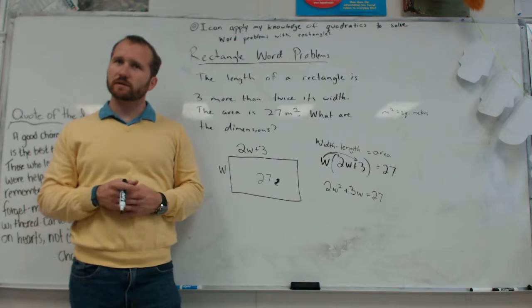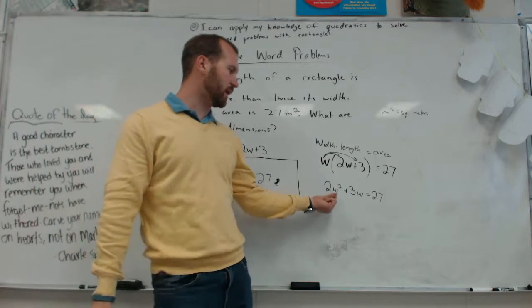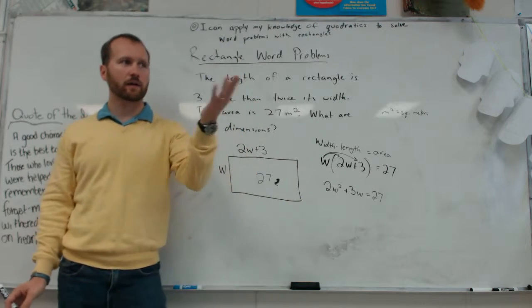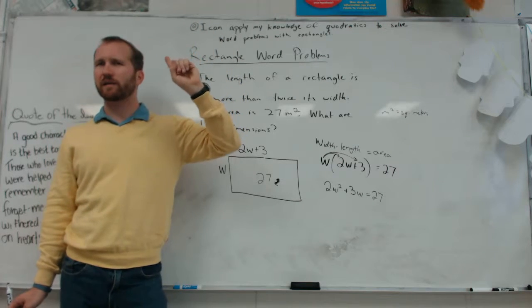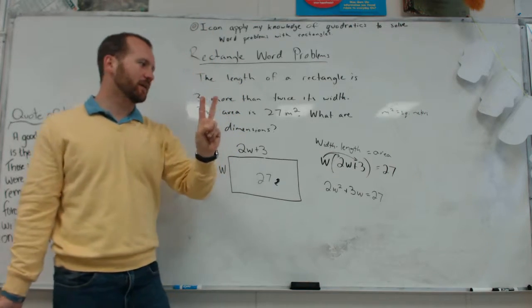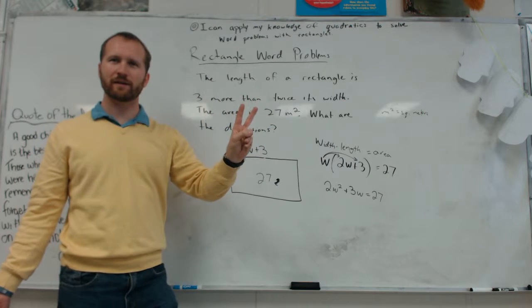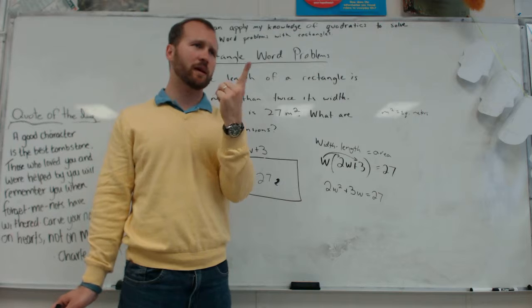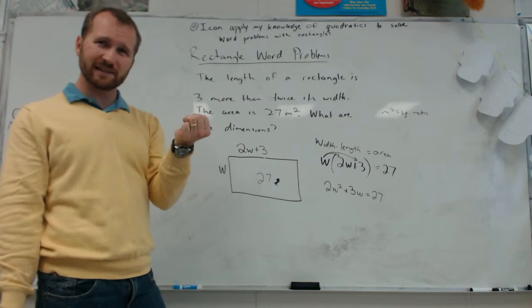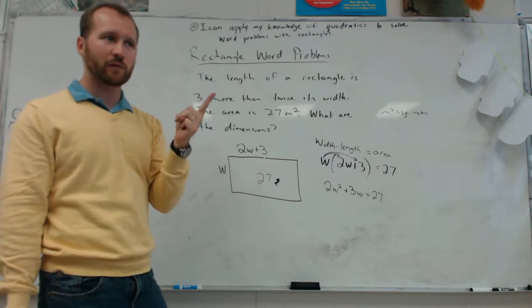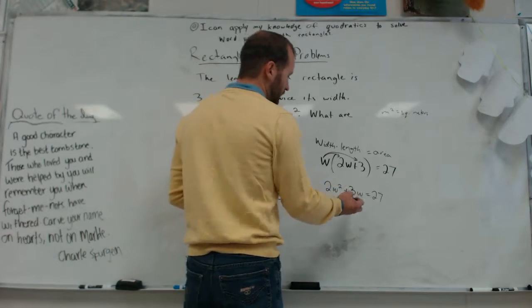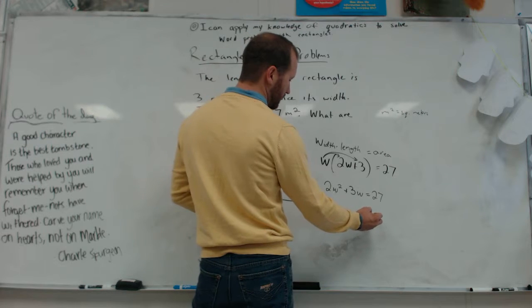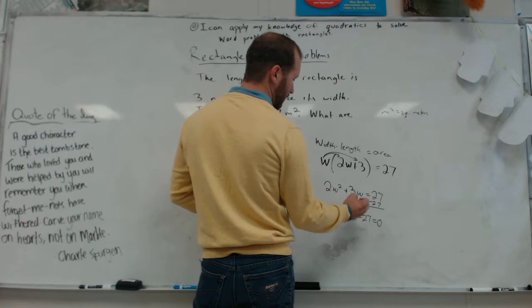So w times 2w is 2w squared. W times 3 is 3w. Now we have some options. We want to try to solve this for w. What's one way you know to solve a quadratic equation? The quadratic formula. What's another way you know you could use? Factoring. What's a third way that I told you you would never use again? Completing the square. So you could use any of those. Generally, the easiest one to do is factoring, if you can. So let's get this equal to zero. 2w squared plus 3w minus 27 equals zero by subtracting 27 from both sides.